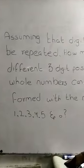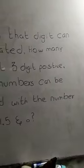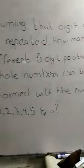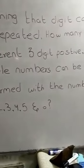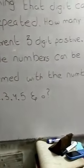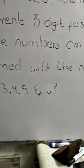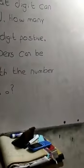Next question: Assuming that digits can be repeated, how many different 3-digit positive whole numbers can be formed with the numbers 1, 2, 3, 4, 5, and 0? In this case, 0 is included for the first time.